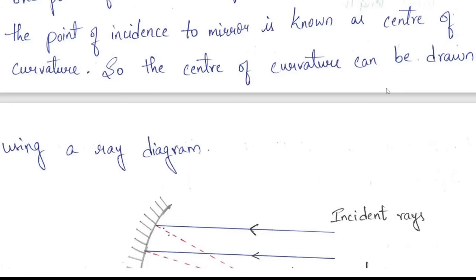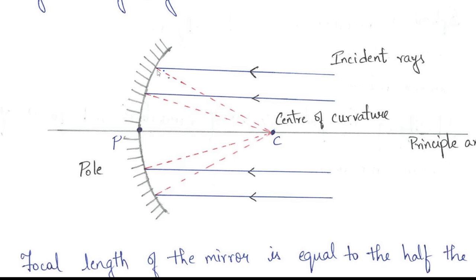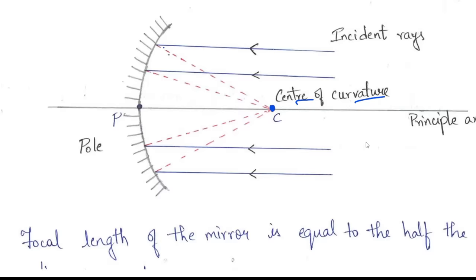The point of intersection of all normals drawn from the point of incidence to the mirror is known as the center of curvature. This can be shown using a ray diagram: the incident rays fall on the mirror, and if you draw the normals of these incident rays, they meet at a particular point called the center of curvature.